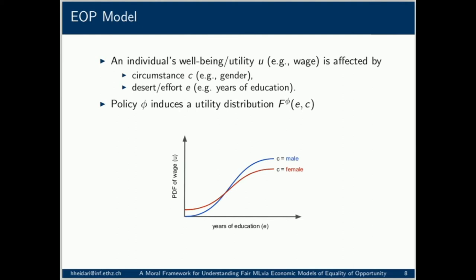Circumstance, or type C, is meant to capture all factors for which the individual should not be held morally accountable. For instance, in the context of employment decisions, we may consider gender as circumstance. Effort E captures all accountability factors — those that can morally justify inequality. In our example, we may consider years of education as effort. For any circumstance C and any effort level E, a policy phi induces a distribution of utility or well-being among people of circumstance C and effort E.